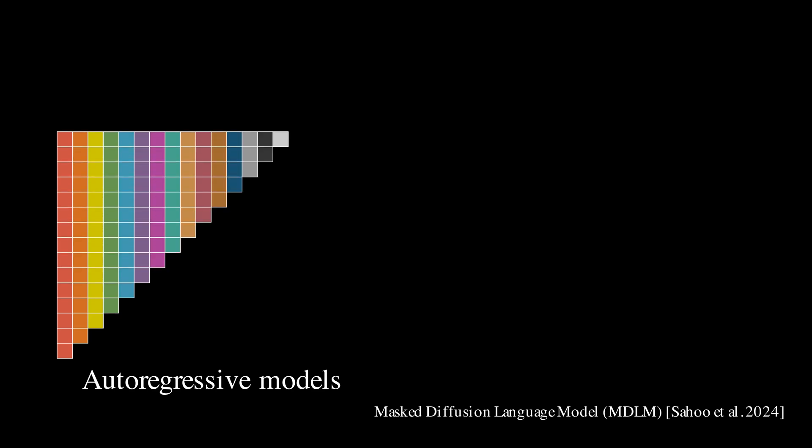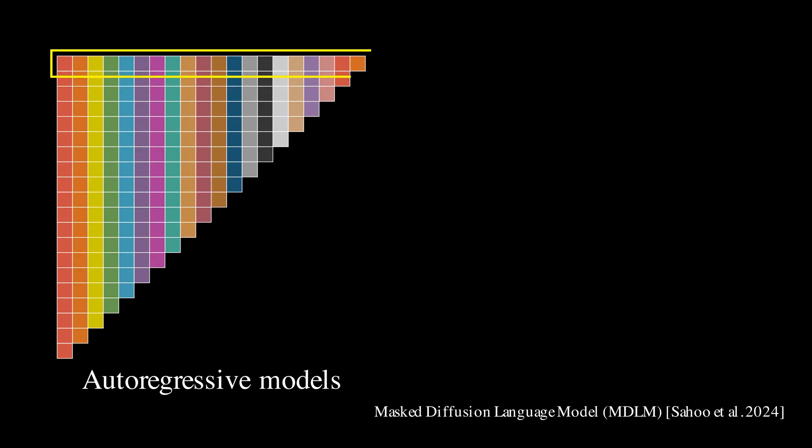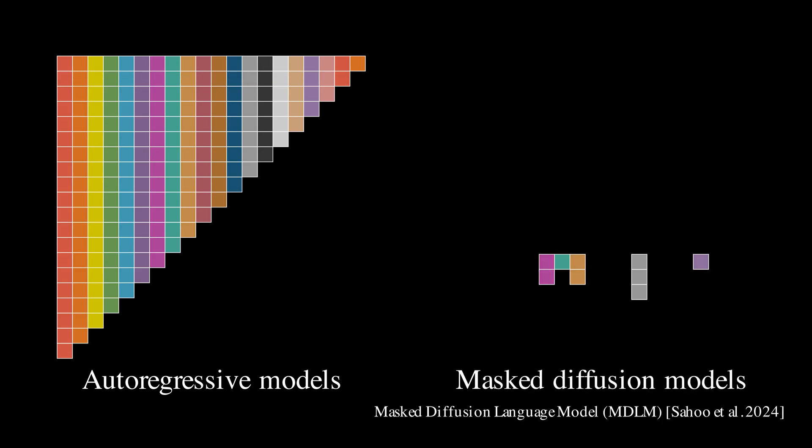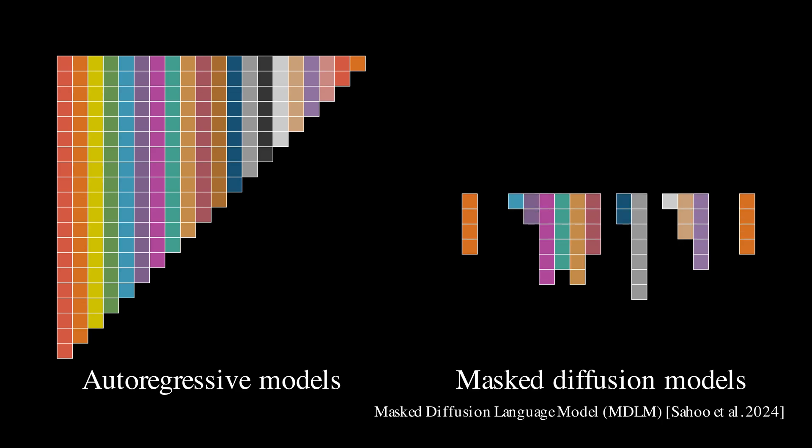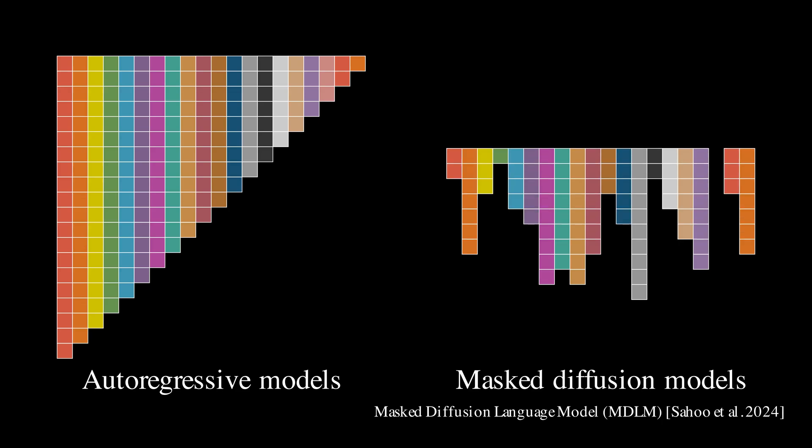I find it interesting to contrast the generation process with autoregressive models. To generate a sequence of tokens, autoregressive models predict one token at a time, following a strict left-to-right order. In contrast, mask diffusion models generate sequence in a completely different way. Starting with a fully masked sequence, the model gradually unmasks and replaces mask tokens with actual vocabulary tokens until all tokens are predicted. Mask diffusion models offer greater flexibility, parallelism, and controllability compared to autoregressive models.